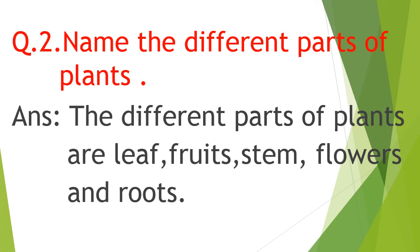Now let's learn the answer. The different parts of plants are: leaf, fruits, stem, flowers and roots.